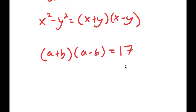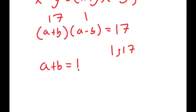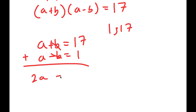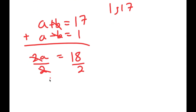Now, a squared minus b squared equals a plus b times a minus b, which equals 17. The only factors of 17 are 1 and 17, meaning one of these two has to be 17 and the other has to be 1. Since a plus b is greater than a minus b, we get a plus b equals 17 and a minus b equals 1. Adding these two equations: 2a equals 18, so a equals 9.